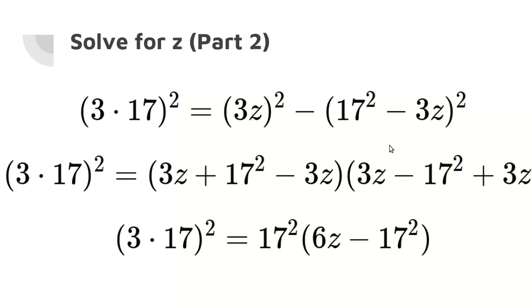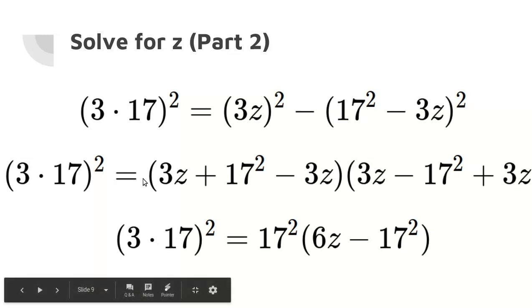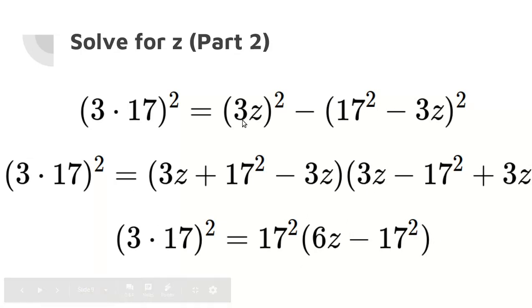So we can use the formula a squared minus b squared equals (a plus b)(a minus b). So this becomes (3Z plus 17 squared minus 3Z) and then (3Z minus 17 squared plus 3Z) because the negatives, remember, minus and negative is positive. So this becomes plus 3Z. Simplifying these two terms right here, this first trinomial just becomes 17 squared and the second trinomial becomes 6Z minus 17 squared. So now, to recap, we have 3 times (17 in parentheses) squared equals 17 squared times (6Z minus 17 squared). And that came from doing difference of perfect squares to the right-hand side here.